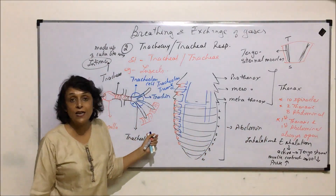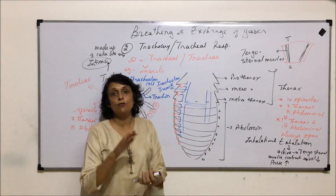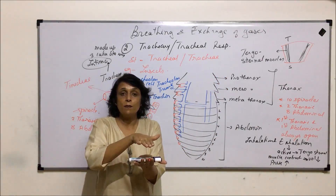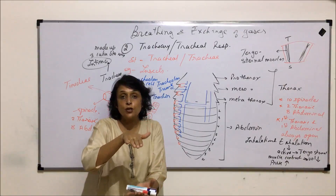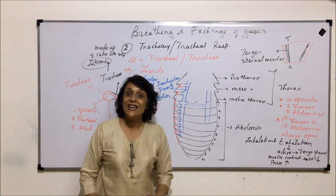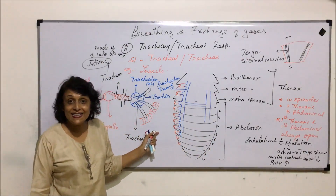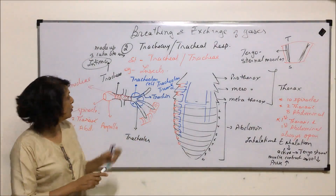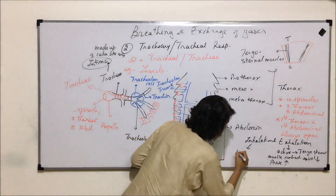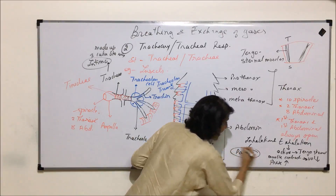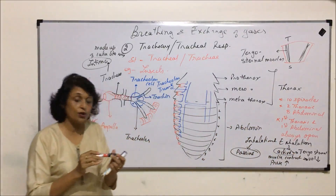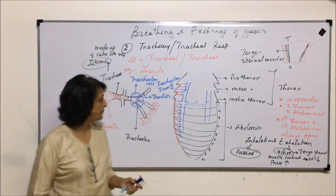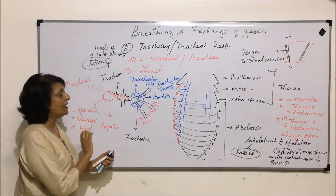When inhalation has to take place, the same muscles relax. When they relax, the tergum and sternum plates move back to their original position — volume increases. When volume increases, pressure decreases compared to surrounding, and air from the surroundings comes into the tubes through the spiracles. So inhalation is a passive process. This is just the reverse of what happens in humans — in our case, inhalation is active and exhalation is passive.